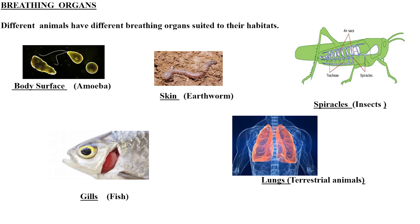Mammals like human beings, birds, reptiles, and adult amphibians like frogs breathe with their lungs. They have a pair of lungs connected to a windpipe, also called the trachea. Air reaches the lungs through the nostrils, travels through the nose to the windpipe, and then to the lungs. Carbon dioxide is exhaled out along the same path. Different organisms have different organs for breathing.